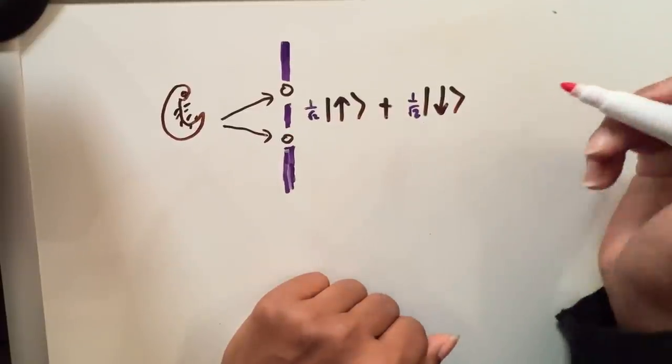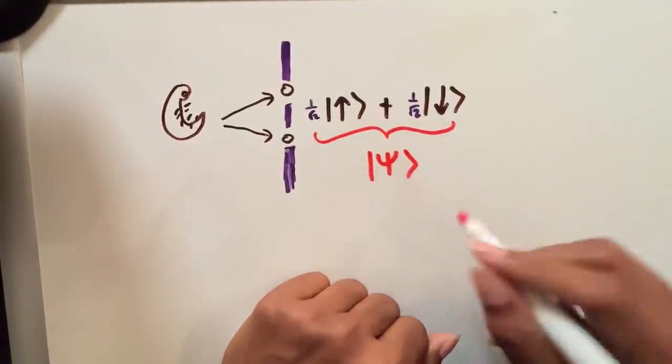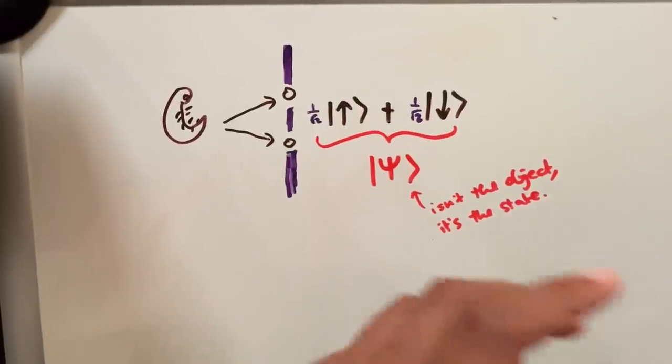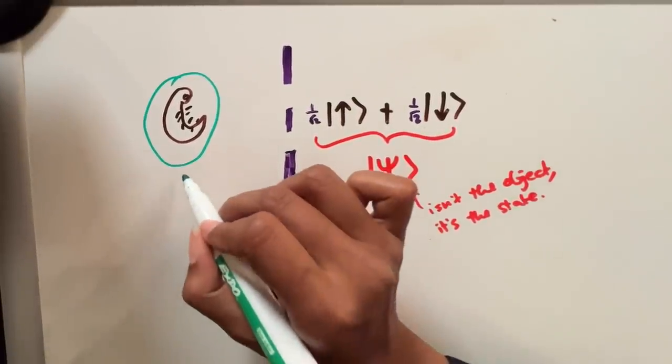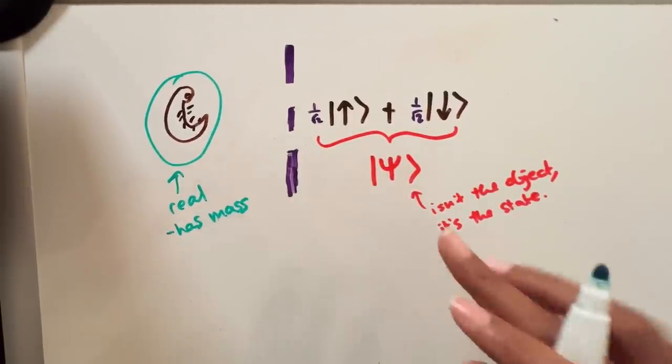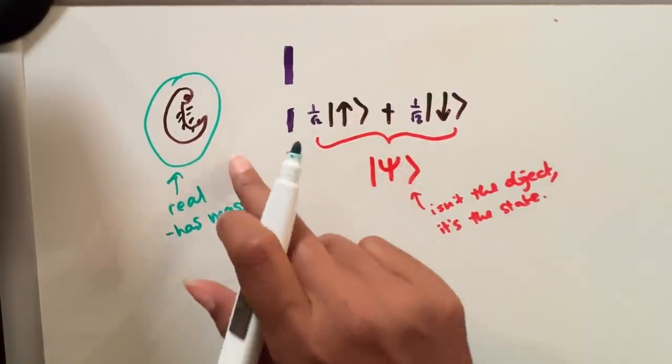This wave function, which I'm just going to call psi, which is in quantum mechanics the standard way of how you keep track of the state of an object, my solution is that this wave function isn't the object, it's the state of the object. What does that mean? So I guess in this example it would mean that our body here exists and is real and has mass.